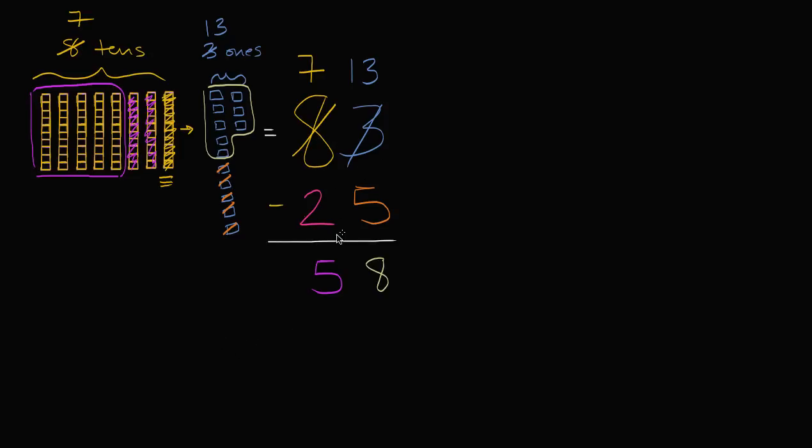So there you have it. 83 minus 25 is 58. And what we've just done here is we've regrouped. We took a group of 10 and we broke it up and we turned it into 10 1s. And the reason we did that is so that we could subtract in the 1s place here.